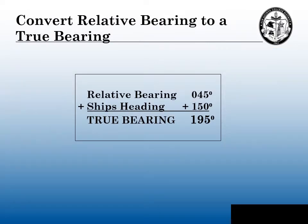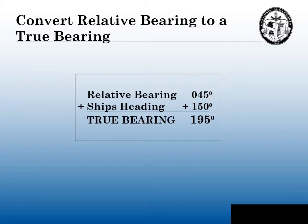On the unstabilized head-up relative motion radar, relative bearings need to be converted to true bearings. Here's how: take the relative bearing — for example, 045 degrees — then add the ship's heading, say 150 degrees. Add those two together, and the true bearing will be 195 degrees.